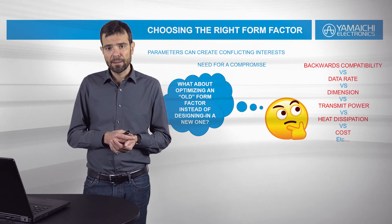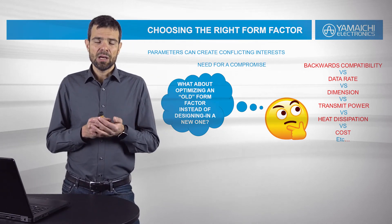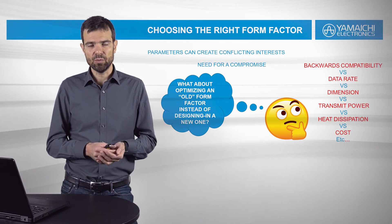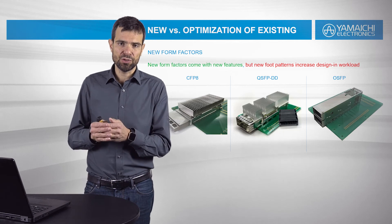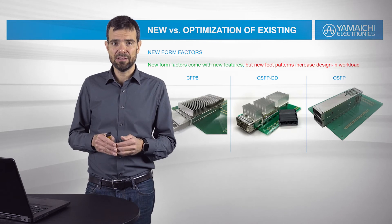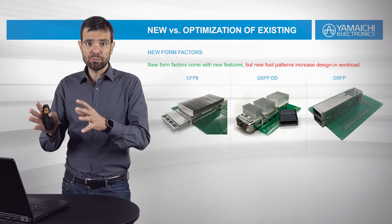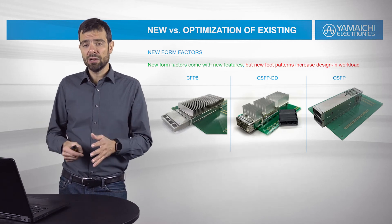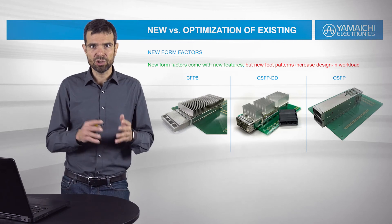One question that is maybe not so obvious is: what about optimizing old form factors instead of using a new one? New form factors come with new features, but they also come with additional design-in activity. If you go from QSFP to QSFP-DD, the footprint pattern changes and the cage size changes. So a legitimate question would be: why not keep the old form factor and just upgrade it?